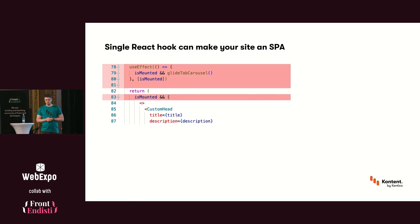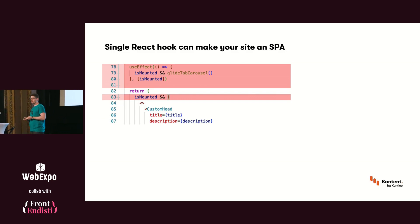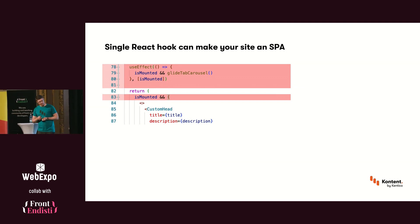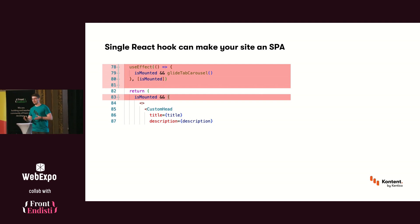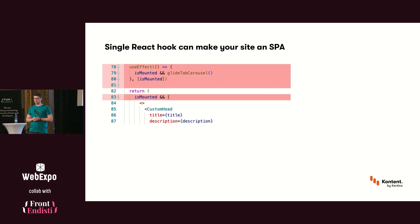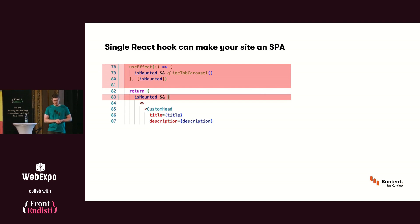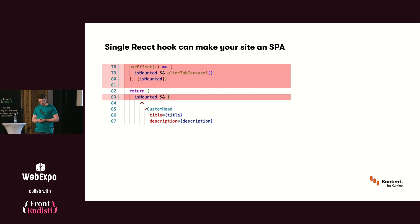Another thing we found out when we were already putting the website to production is that on our layout component, we had a React hook that contained a bit of code that was only supposed to execute a carousel on the page. But this single React hook for that small functionality actually turned our nice static site into pretty much a large single-page application, because what Next.js would do is pack everything into a JSON file and serve it to clients, so the page would be rendered only on the client. We found out because we ran some SEO tests and were not getting the right results.